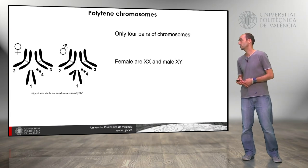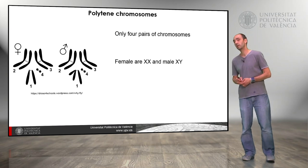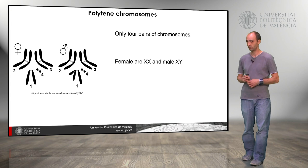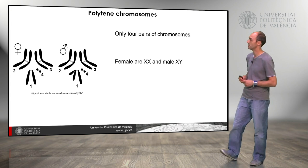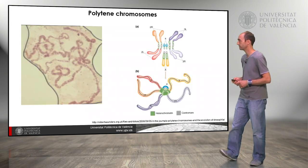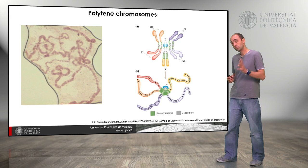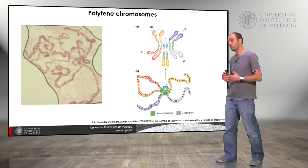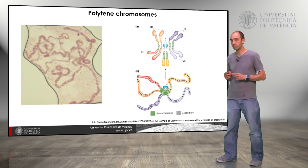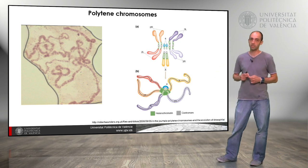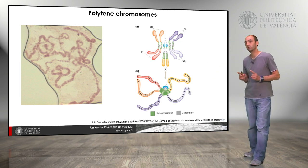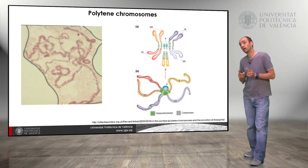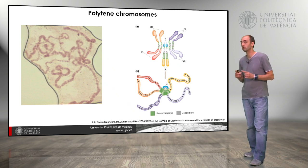The polytene chromosomes: Drosophila has only four pairs of chromosomes. Females are XX and males are XY. In some cells of Drosophila — particularly in the salivary glands — we can see chromosomes that are much thicker. Why? Because the chromosomes replicate, the DNA replicates, but the cells don't divide. So we have cells that contain a greater amount of DNA and a greater number of chromosome copies.